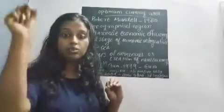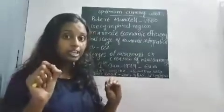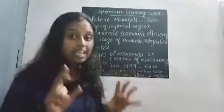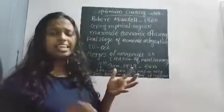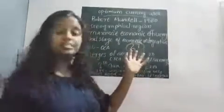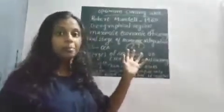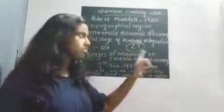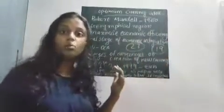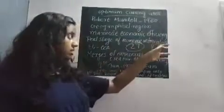Now there are 19 countries in the European Union which are using euro as their common currency. There are 27 countries in the European Union in total, but not all of them use euro. It is only 19 countries that use the euro as their common currency, and all 19 countries are collectively known as the eurozone, which is an optimal currency area.